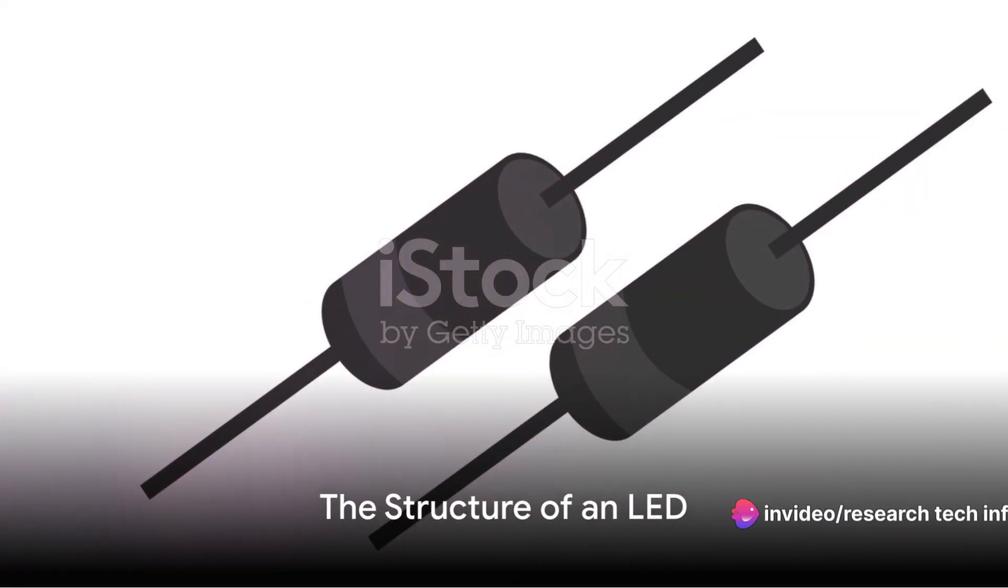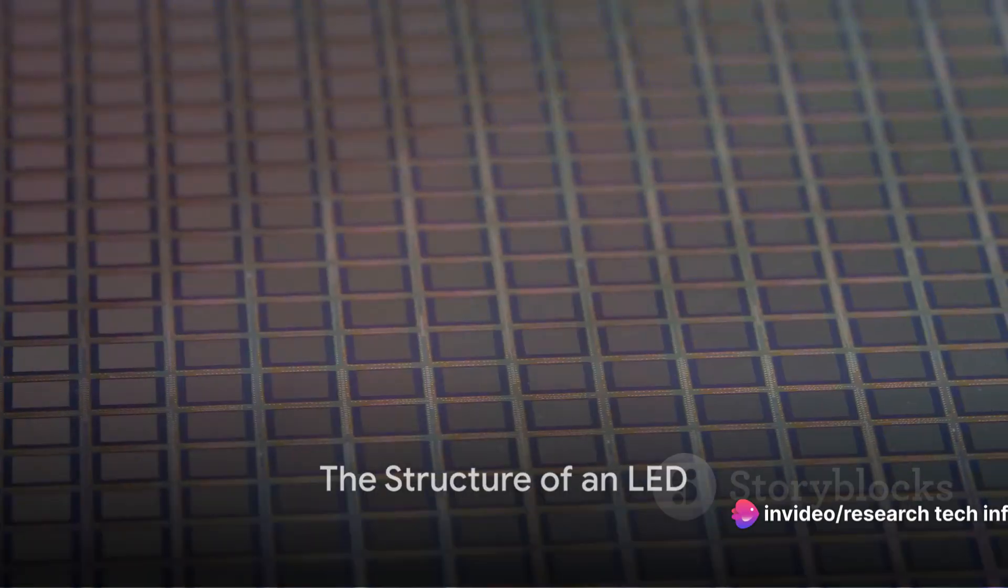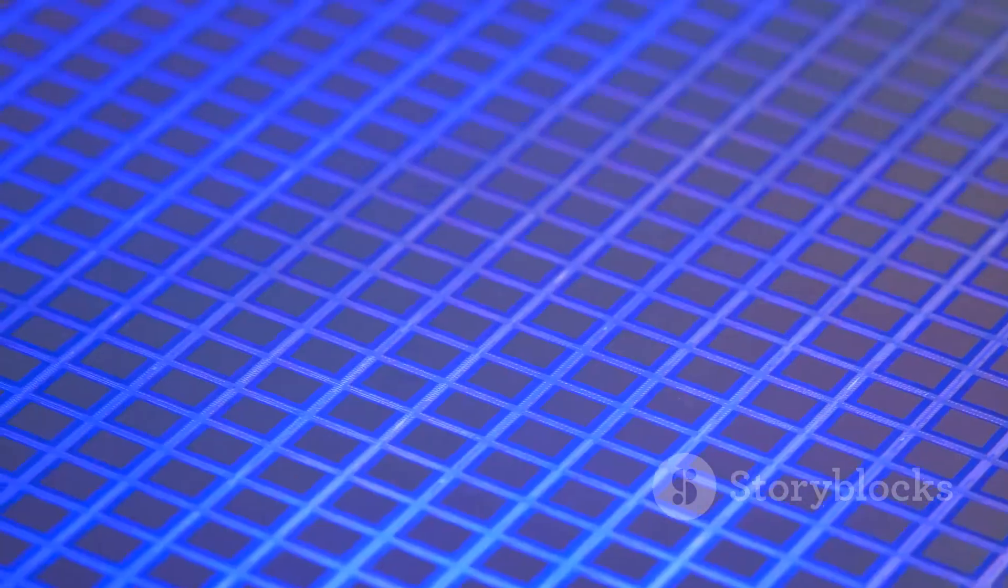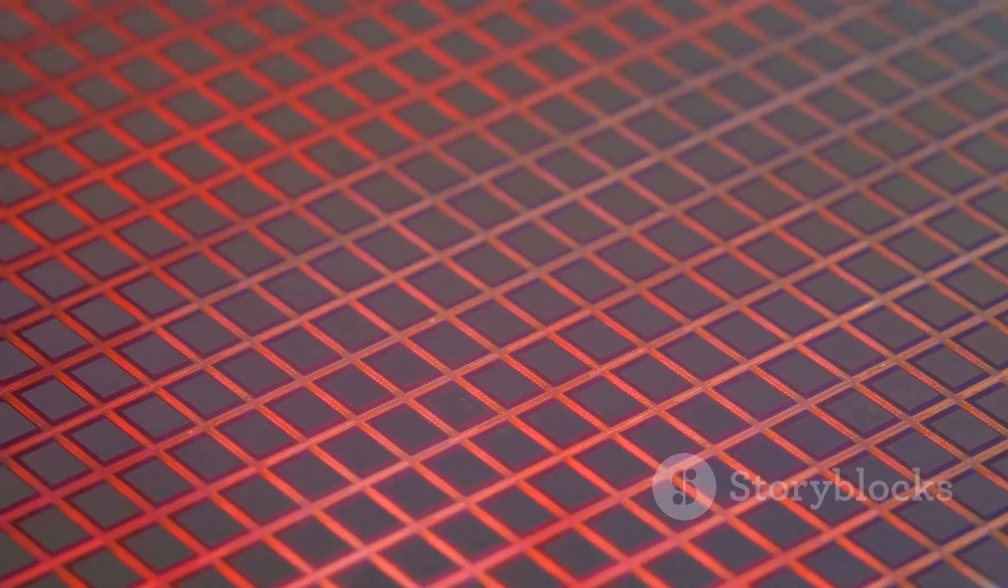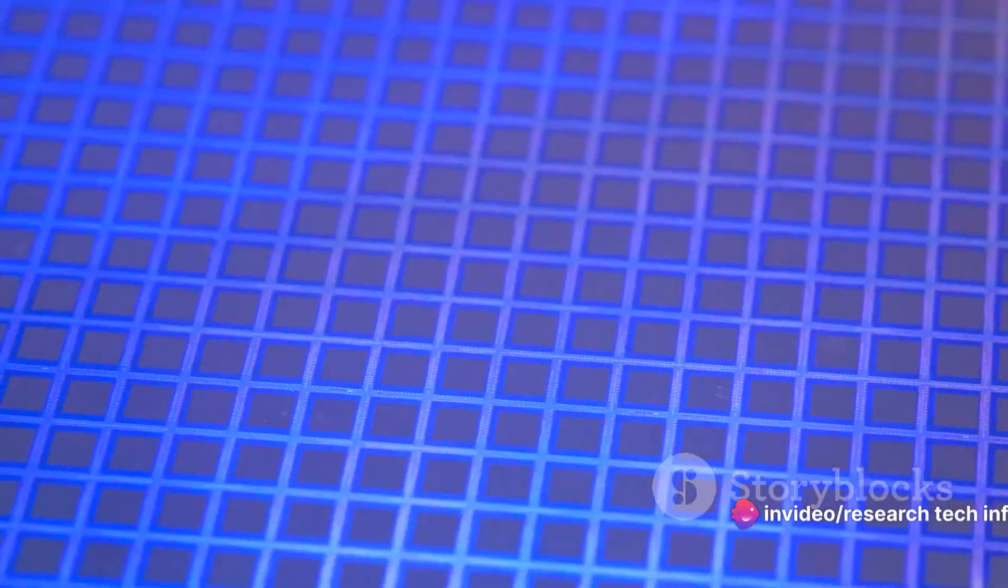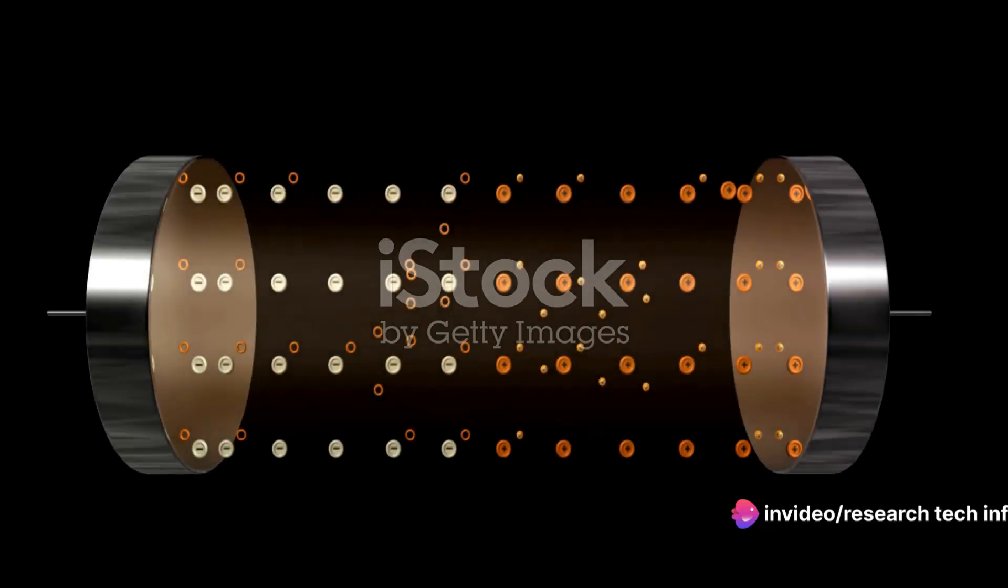At its core, an LED is a special type of diode. A diode, in the simplest terms, is an electrical component that only allows current to flow in one direction. This is because of an interesting structure called a P-N junction.